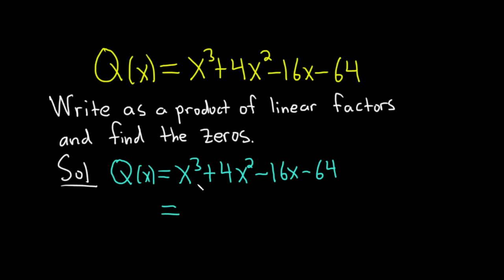So from the first two terms, we can pull out a common factor of x squared. So this is x squared, parentheses, and then we think about what's missing. What do we have to multiply by x squared in order to get x cubed? Well, just x.